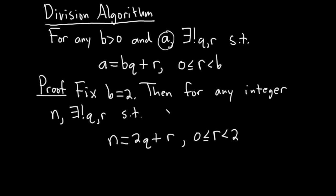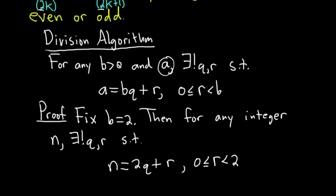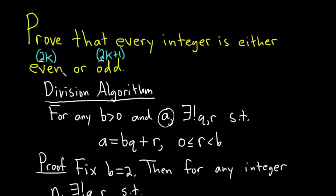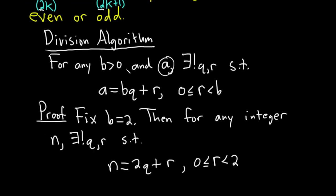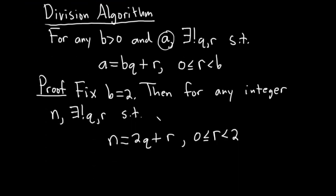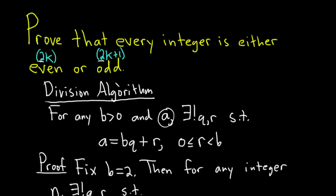So again, just a very careful application of the division algorithm here. We chose b to be equal to 2, and the reason we did that is because we're trying to show that every integer has the form 2k or 2k plus 1. In other words, every integer is even or odd.